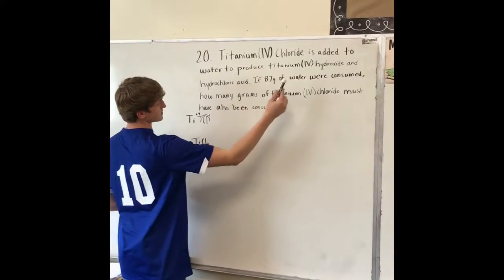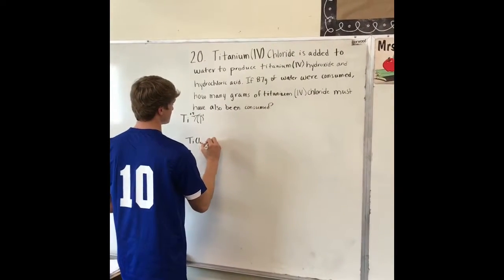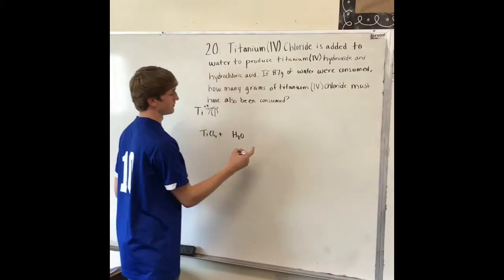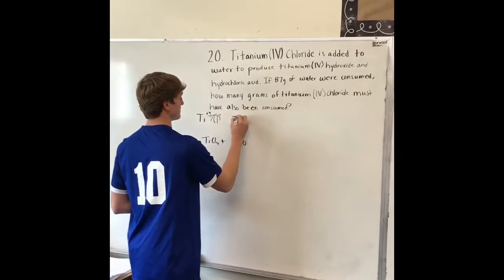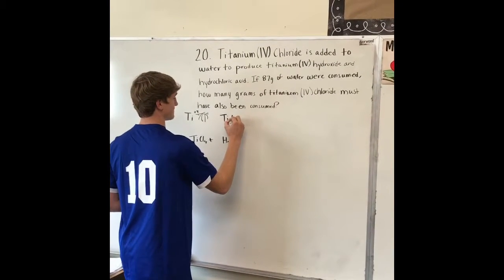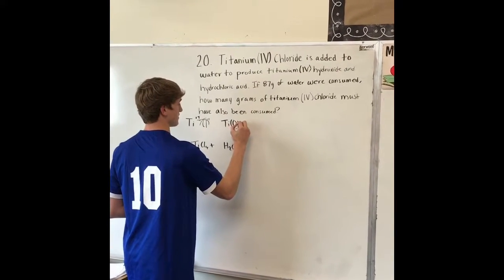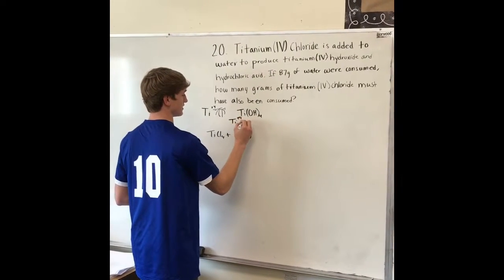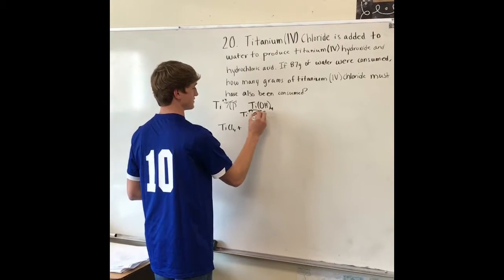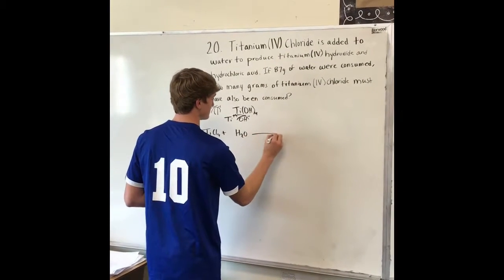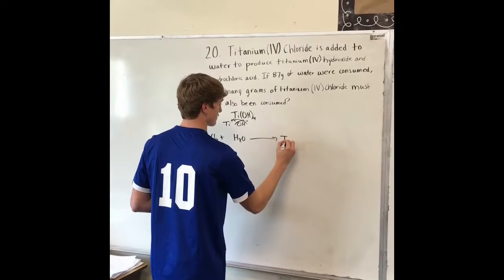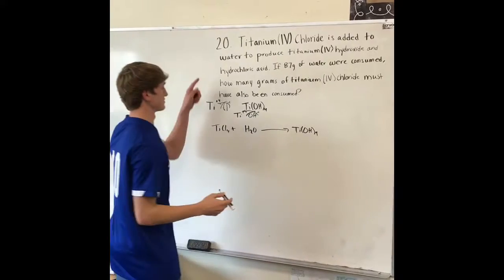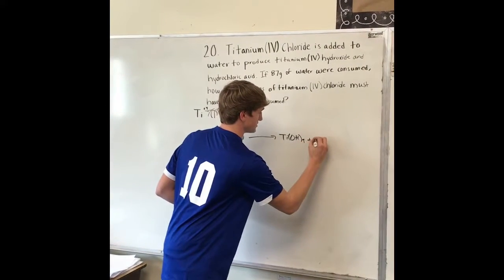Next is plus H2O, which is water. Then the next combination is titanium hydroxide, Ti(OH)4, because titanium has a charge of +4 and hydroxide has a charge of -1, so you switch them. Then the next product is hydrochloric acid, which is HCl.